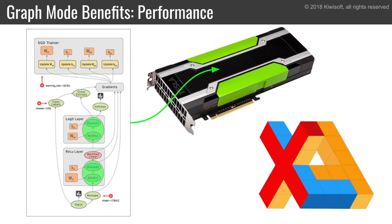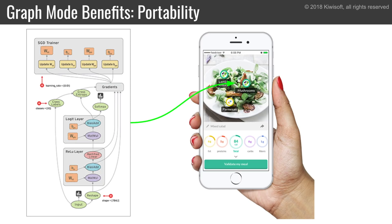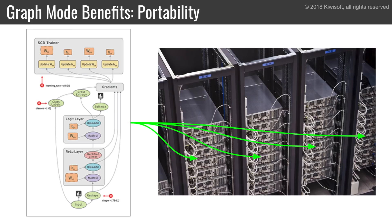Another benefit of graphs is that they make it simpler to deploy your models to any device, whether it's a mobile phone or a cluster of GPU servers. You're not tied to a particular language — you could train a model using Python and run it in Java or vice versa.